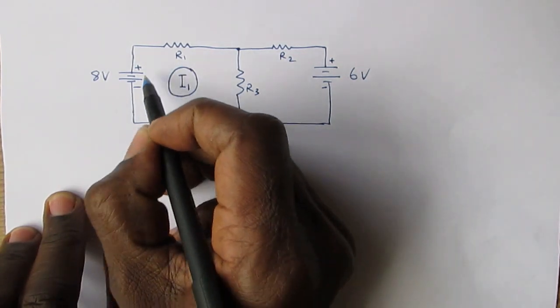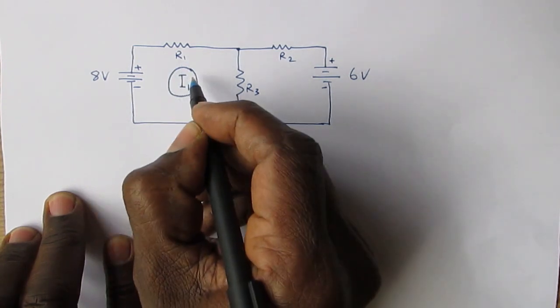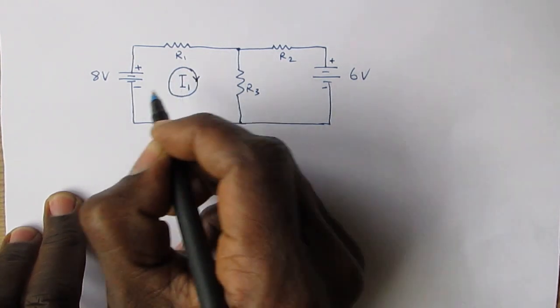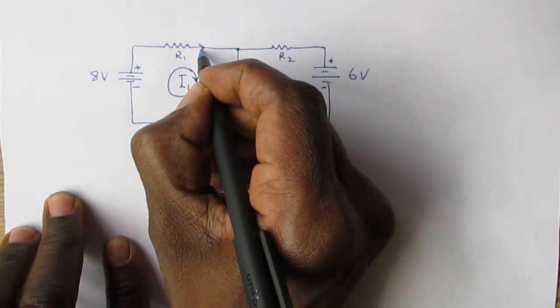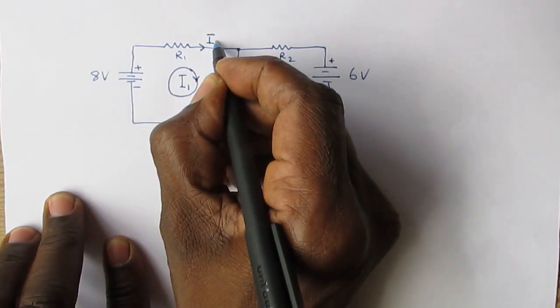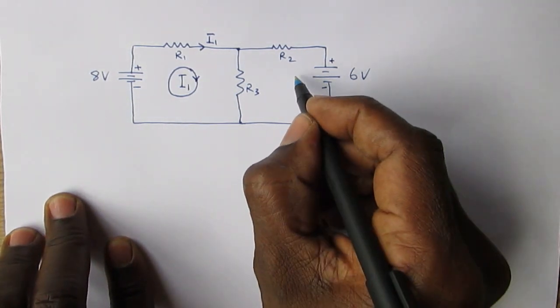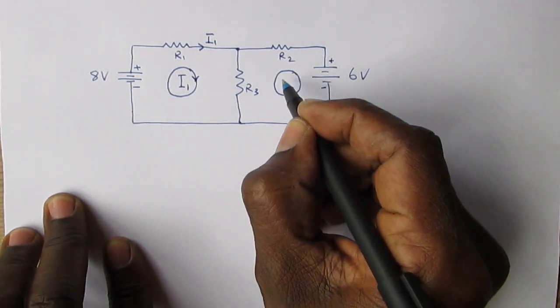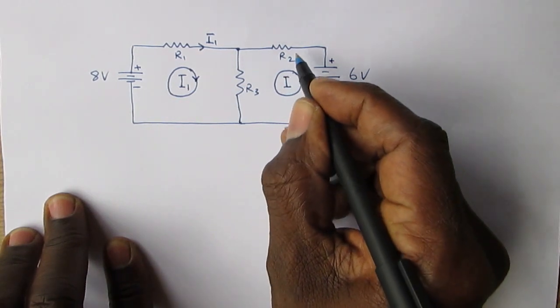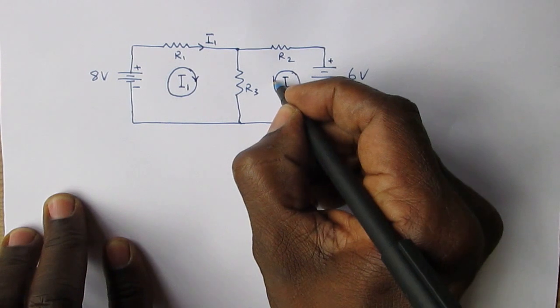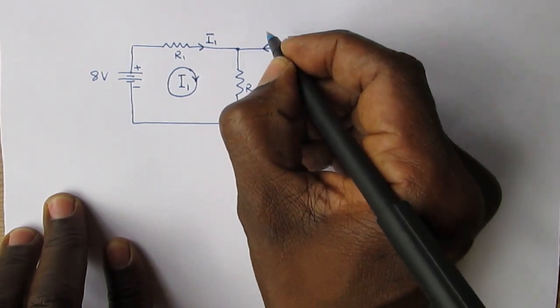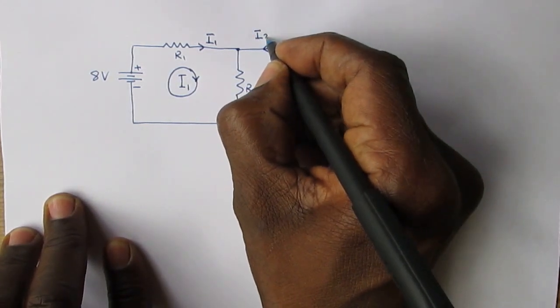We assume that I1 is flowing clockwise through here. On the right-hand side, we assume I2 is meshing with I1, so it is flowing anticlockwise, flowing down this way, so you put the arrow like that. Therefore, this is I2.